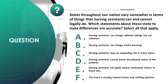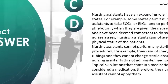States vary in terms of what nursing assistants can and cannot legally do. Which statements are accurate? Select all that apply. A) nursing assistants can change catheter tubings but not catheters, B) nursing assistants can change sterile dressings, C) nursing assistants have an expanding role in many states, D) nursing assistants cannot assess physical status, E) nursing assistants can apply topical medication lotions to intact skin, F) the trend is toward nurses-only staffing. Correct answer is C, D.